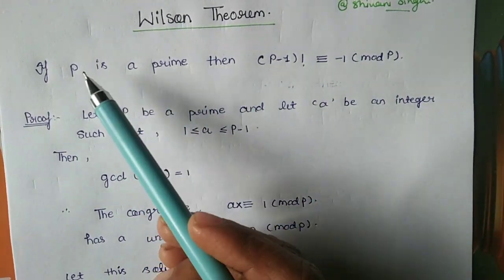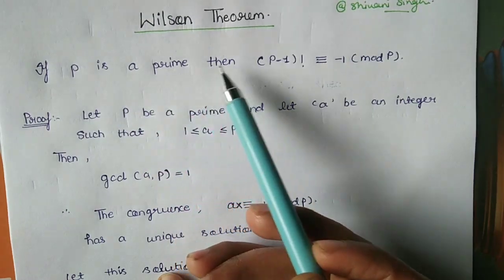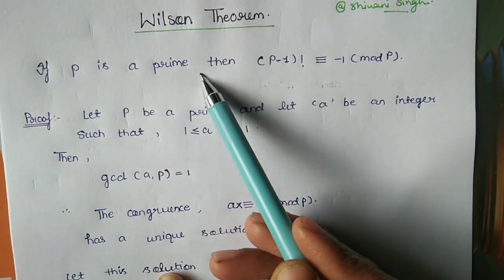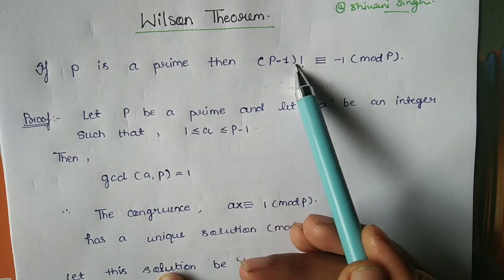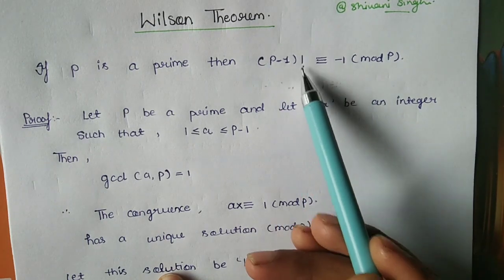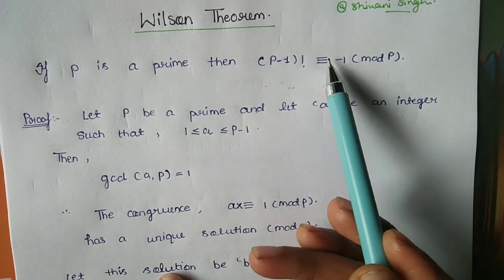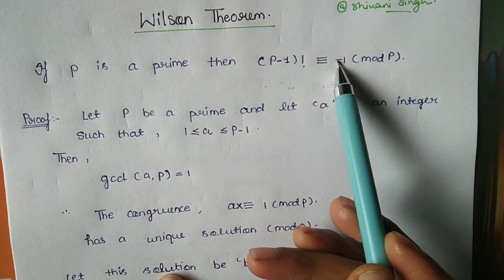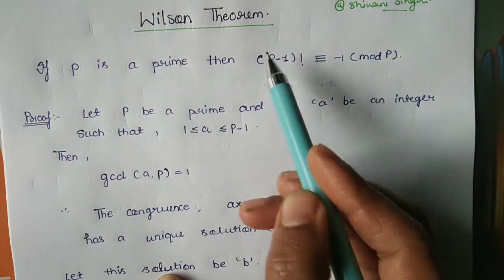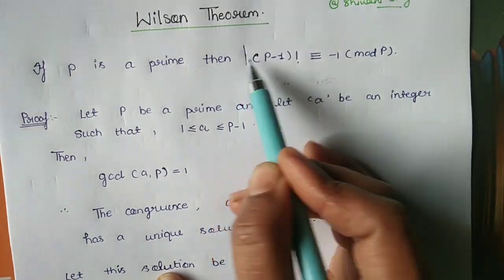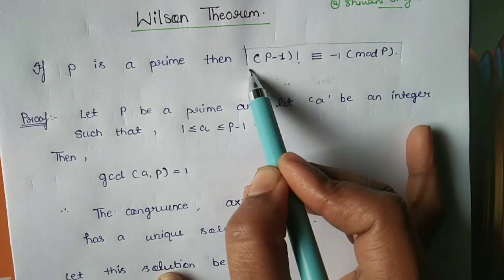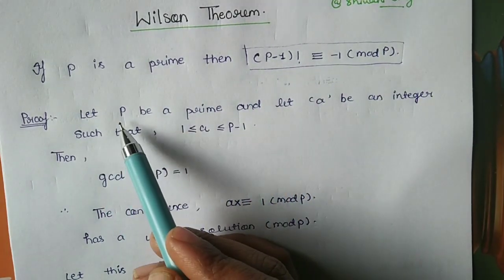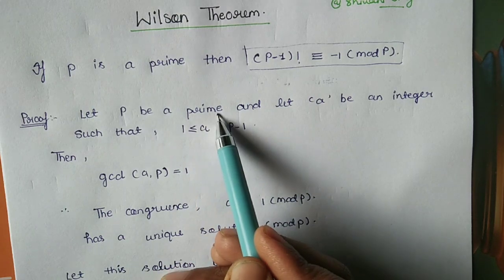First, let's see the statement of Wilson's Theorem. If p is a prime, then (p-1)! is congruent to -1 mod p. This is Wilson's Theorem, and we will now prove it.